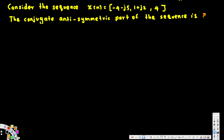Let's look at this problem. The question asks: consider the sequence x(n) = {-4-j5, 1+j2, 4}. Find the conjugate antisymmetric part of the sequence.